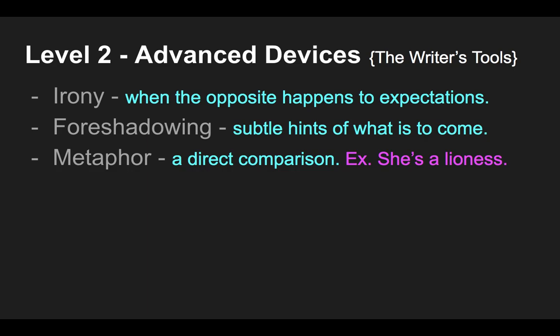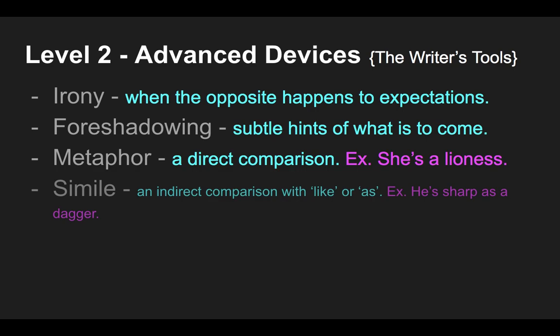The next advanced device is metaphor — a direct comparison. We use one thing directly compared to another, usually using the verb 'to be.' For example: 'She's a lioness.' The character isn't actually a lioness — it's a comparison drawing out strength, power, and charisma. The second type is simile — an indirect comparison using 'like' or 'as.' For example: 'He's sharp as a dagger.' It's indirect because we use the word 'as.'